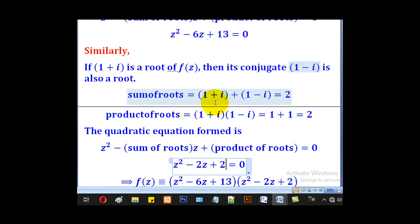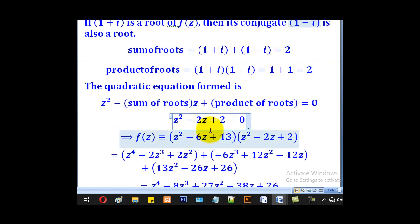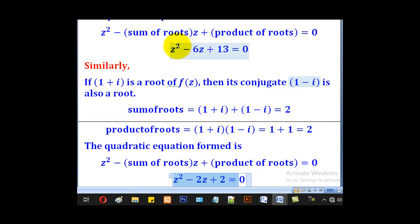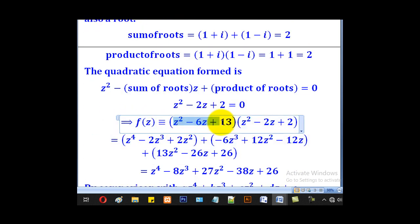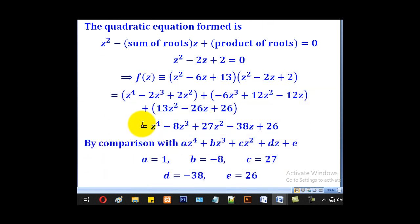After that, we multiply the two quadratic equations to give the quartic equation. So multiply the two and expand to get that. This z² is multiplied through by this to get that. Then -6z is multiplied through by this to get that. And 13 is multiplied through by this to get that. After that, we collect like terms to come up with this.